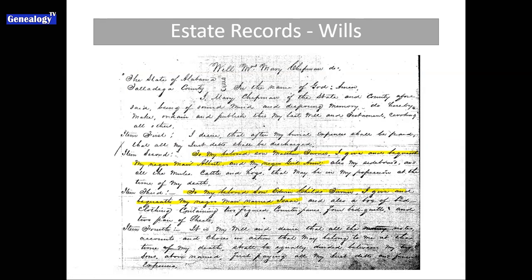Also in estate records you will find actual wills. This is the will of Mrs. Mary Chipman of Talladega County, Alabama. You can see that in her will she leaves to her beloved son Matthew Turner her Negro man Albert and her Negro girl Anne — along with the mules, the cattle, and the hogs. It's the same way as what you saw in the inventory. For her son Edwin Childs Turner, she leaves her Negro man named Isaac, along with a bed and bag of bed clothing. Again, it's property.